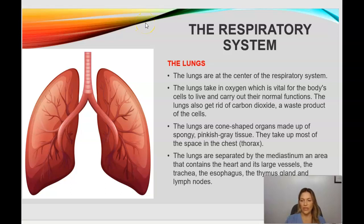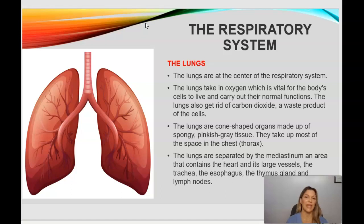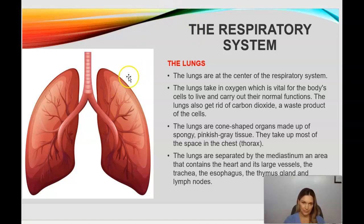The lungs are the center of the respiratory system. They take in oxygen, which is vital for the body's cells to live and carry out their normal functions, and they get rid of carbon dioxide, a waste product of the cells. The lungs are cone-shaped, made up of spongy pinkish-gray tissue, and take up most of the space in the chest cavity. They are separated by the mediastinum, an area that contains the heart and its large vessels, the trachea, the esophagus, the thymus gland, and the lymph nodes.